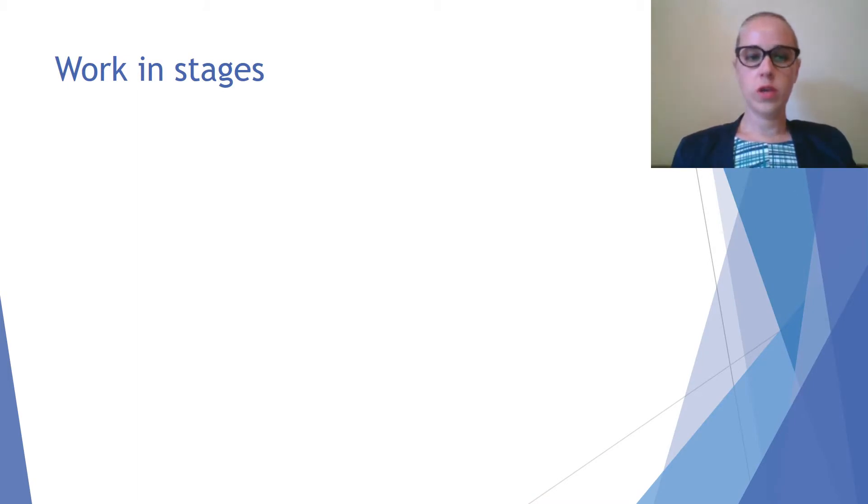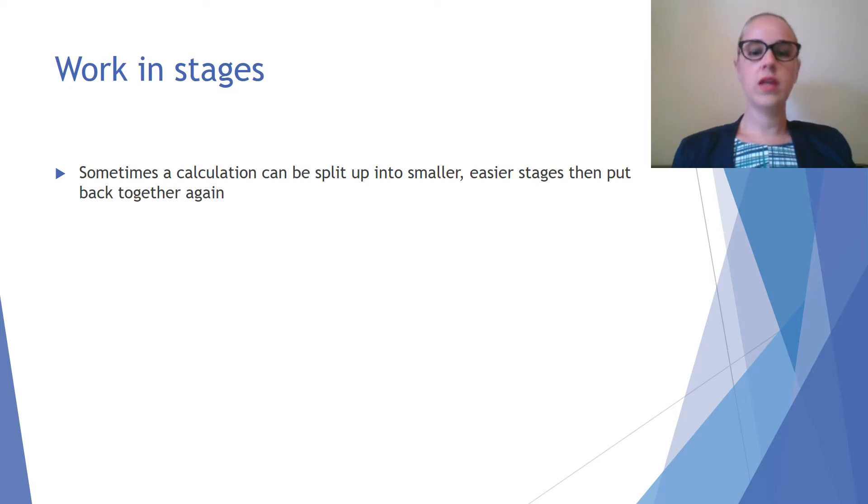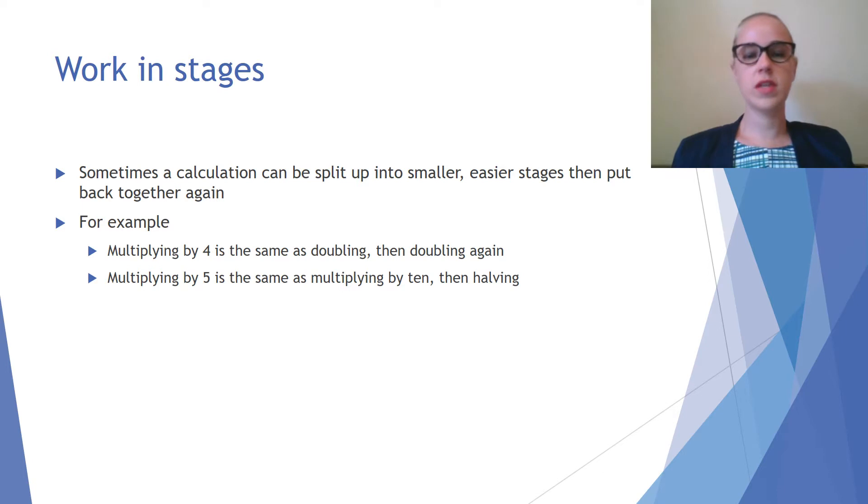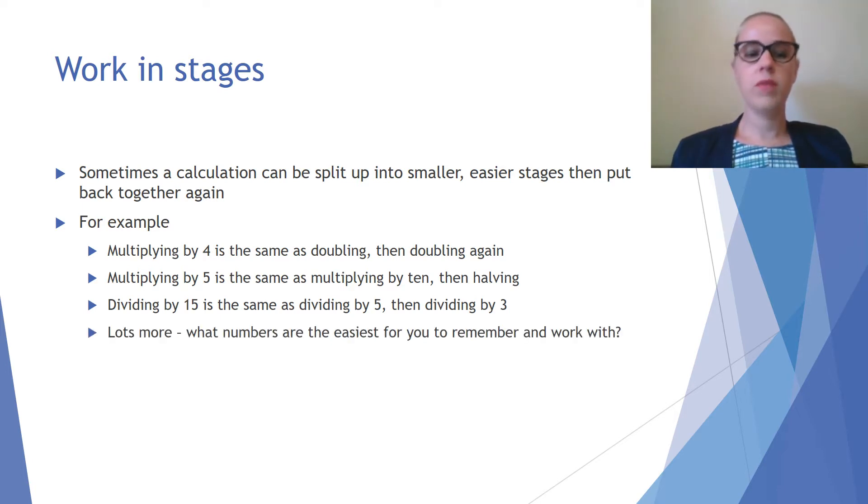One strategy we can use is to work in stages. Sometimes a calculation can be split up into smaller, easier stages and then put back together again. For example, multiplying by 4 is the same as doubling and then doubling again. Multiplying by 5 is the same as multiplying by 10 and then halving. Dividing by 15 is the same as dividing by 5 and then dividing by 3. What you should try to work out is which numbers are easiest for you to remember and work with, then use the ones that work best for you.